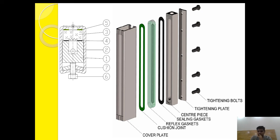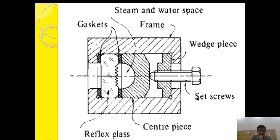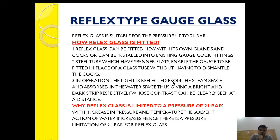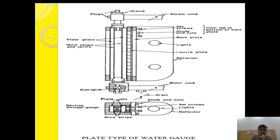As you can see, the light coming from the steam space is totally reflected back, while in the water space the light is completely absorbed and hence appears black. This is the top view of the reflex type gauge glass — the front and back are provided with joints and then covered by a frame held in place by studs. When light falls on the water space it is completely absorbed and appears black, while the steam space appears white, giving a very clear contrast to indicate the water level.